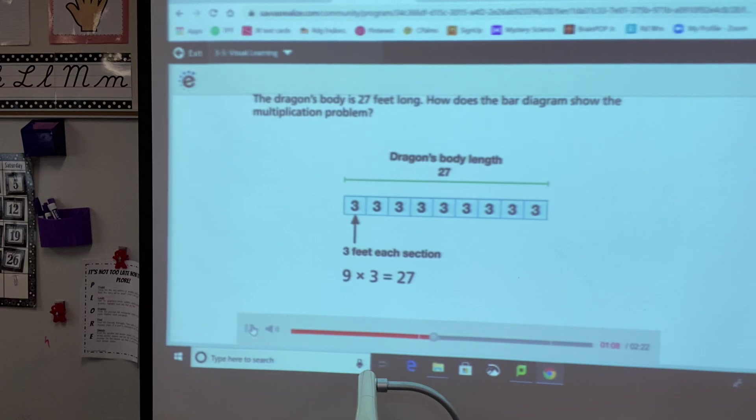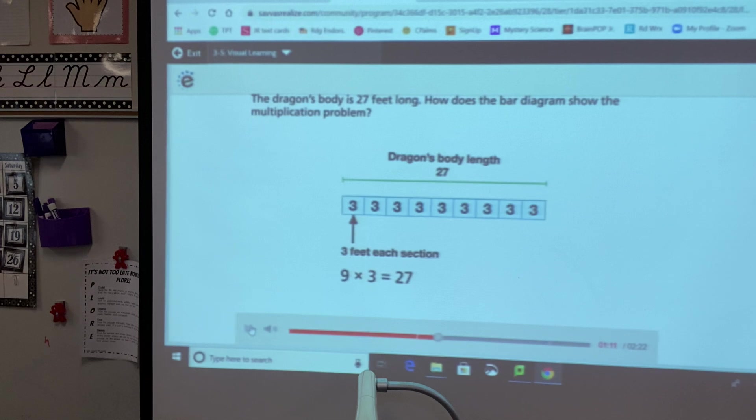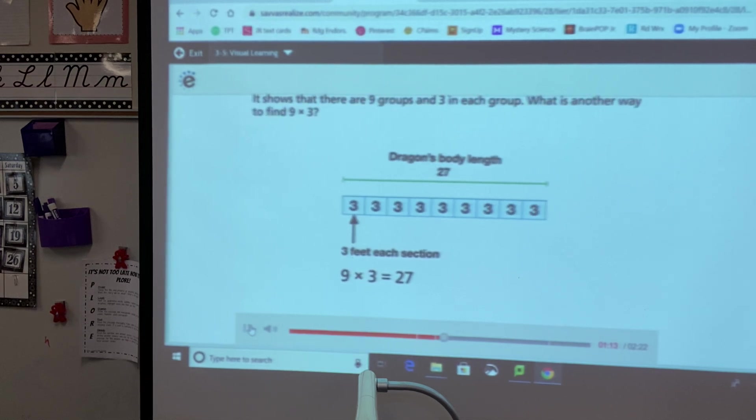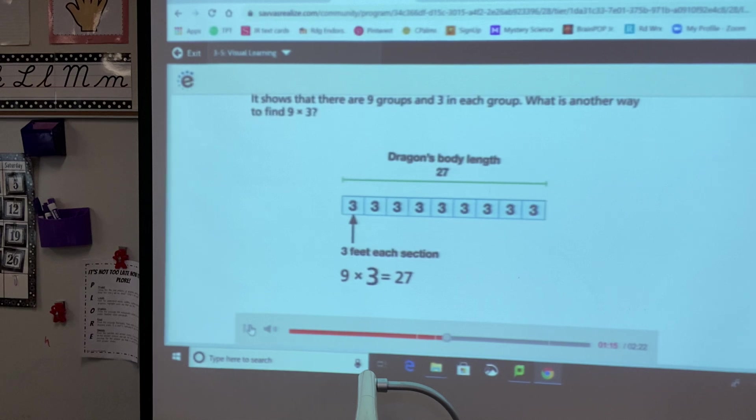How does the bar diagram show the multiplication problem? It shows that there are nine groups and three in each group.